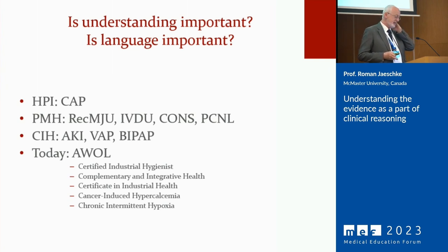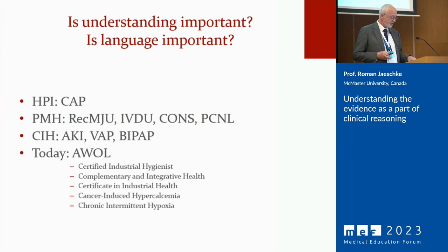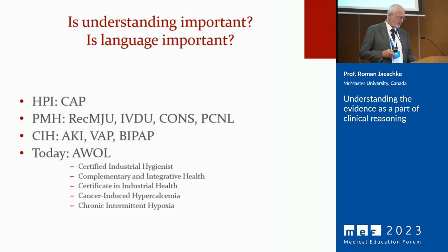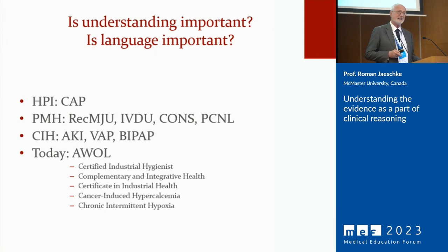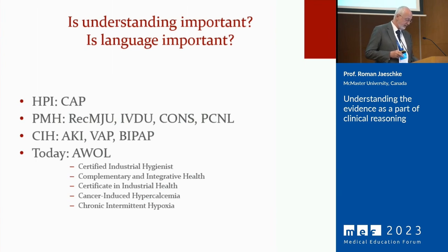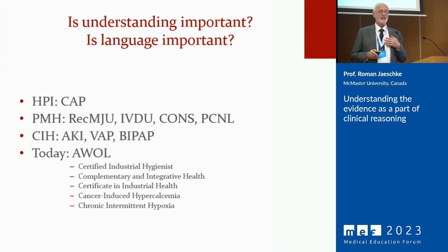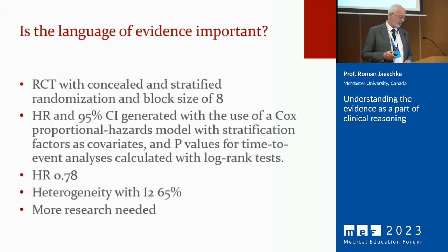I was trying to decipher what it meant — it actually means history of present illness, community acquired pneumonia, past medical history, recreational marijuana use, intravenous drug use. Some I didn't decipher. Others were percutaneous nephrolithotripsy, acute kidney injury, ventilator-associated pneumonia. I went on Google for CIH and got certified industrial hygienist and complementary and integrative care. I was confronted with daily medical practice and had no clue what people were talking about.